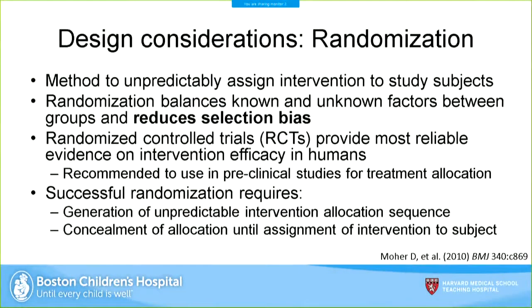Another key consideration is randomization — used when comparing an intervention or treatment between two or more groups. Randomization is a method to unpredictably assign the intervention to study subjects. The real benefit is that it balances both known and unknown subject characteristics between treatment groups, reducing selection bias. In randomized controlled trials for drug development, this is the gold standard — the most reliable evidence for intervention efficacy in humans. Papers on reproducible research in pre-clinical studies also recommend randomization techniques can be applied to animal studies.